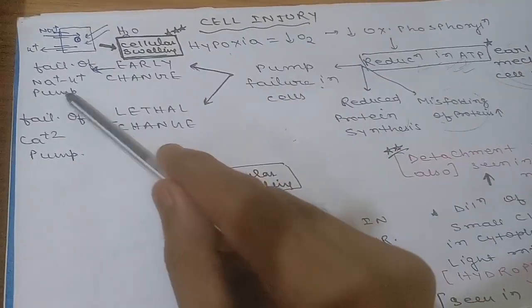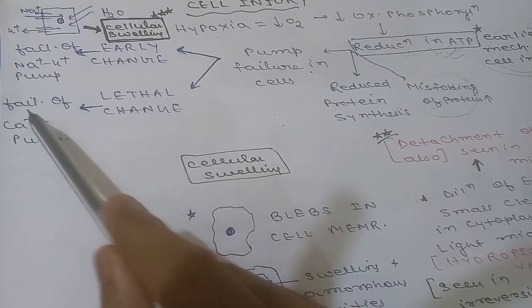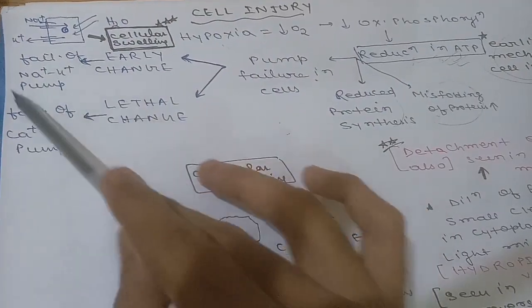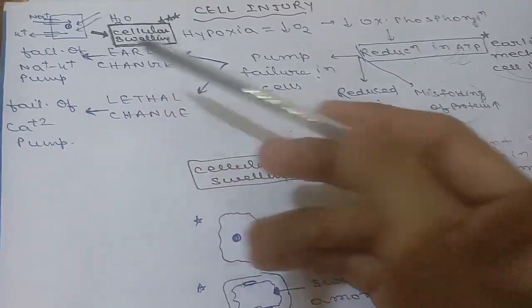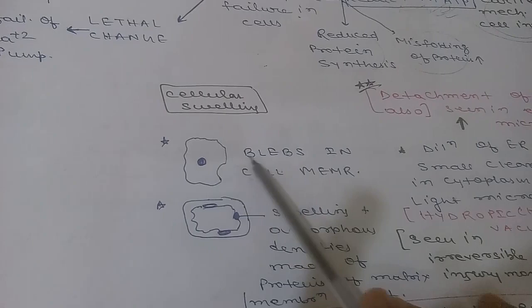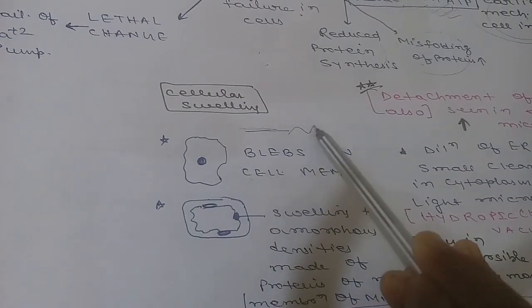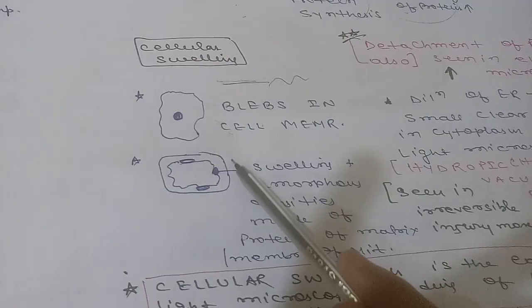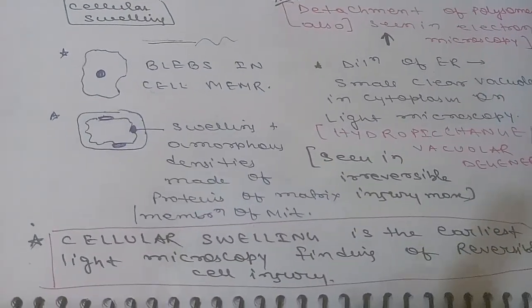Reduction in ATP leads to pump failure, reduced protein synthesis, and increased misfolding of proteins. Pump failure involves two pumps: failure of the sodium-potassium pump (early change) and failure of the calcium pump (lethal change). Failure of the sodium-potassium pump causes sodium to accumulate inside the cell, drawing water in and causing cellular swelling. Cellular swelling is the earliest light microscopic finding of reversible cell injury.